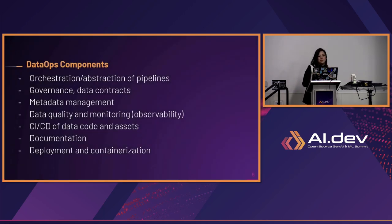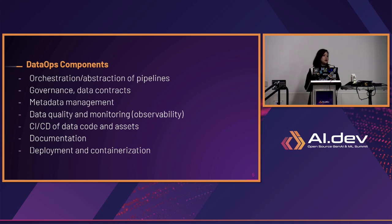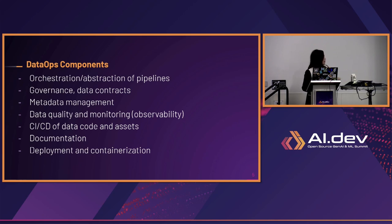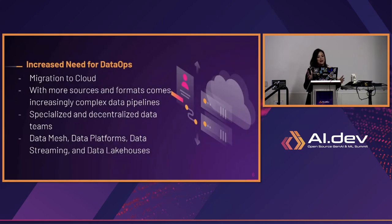Some of the data ops components I'm going to be discussing include the orchestration and abstraction of your pipelines, how you can implement governance and data contracts, metadata management, and using all of these tools for the benefit of your data quality, monitoring and observability. We also want to bring in core DevOps concepts into your data platforms and data teams, such as CI/CD, containerization and deployment, and documentation. This is a lot of ground to cover, but I think it's really useful to be able to look at it all.